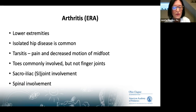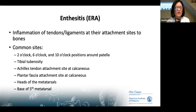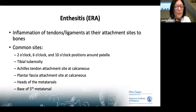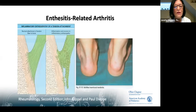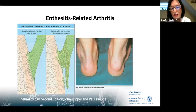Common enthesitis sites include the tibial tuberosity, the Achilles tendon — the largest tendon, so inflammation there can be quite prominent — the plantar fascia, and other areas of the foot. Anything in the foot is a reasonable reason to refer to rheumatology. Enthesitis refers specifically to inflammation at the site where a tendon attaches to the bone.